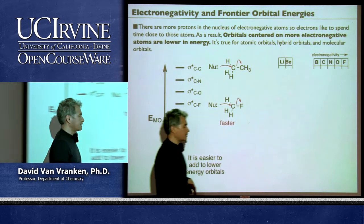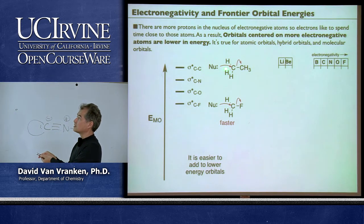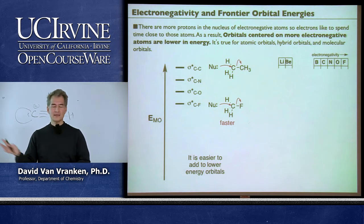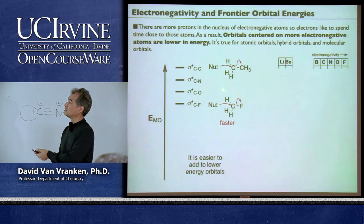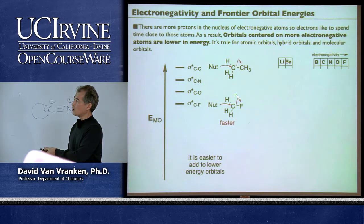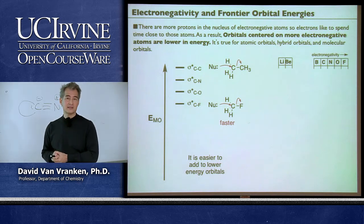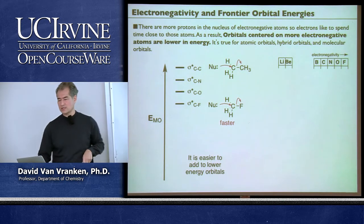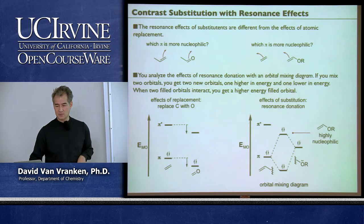What about sigma star antibonding orbitals—the empty orbitals? Electronegative atoms drop the energies of empty orbitals as well. Displacing a methyl anion as a leaving group looks terrible—the antibonding orbital gets lower and lower in energy as you replace carbon with more and more electronegative atoms. Displacing fluoride almost looks plausible because the antibonding orbital is so much lower in energy than for a C-C bond. The explanation for why alkyl iodides are superior electrophiles has nothing to do with 'leaving group ability' or stability of I⁻; it has to do with the C-I antibonding orbital being lower in energy.